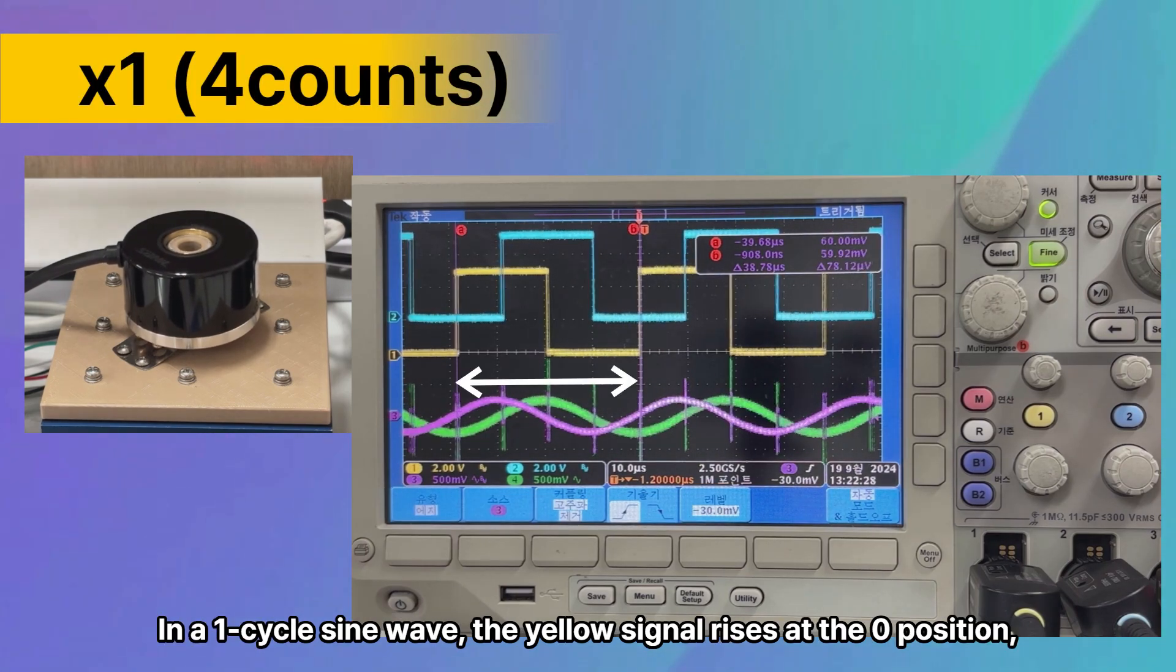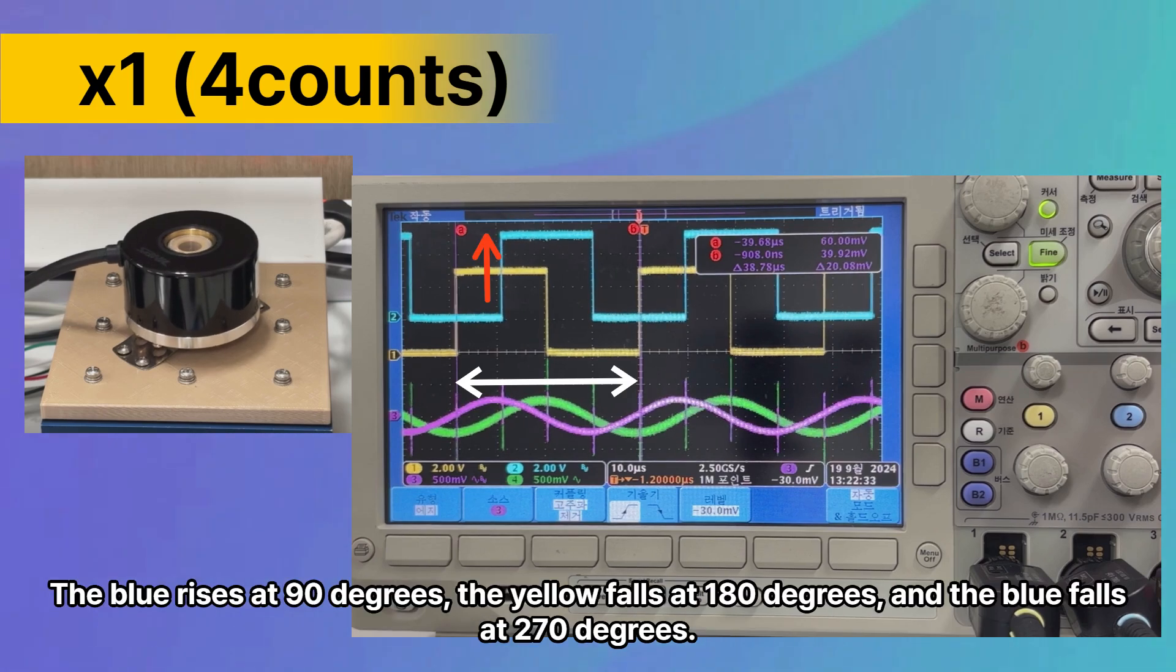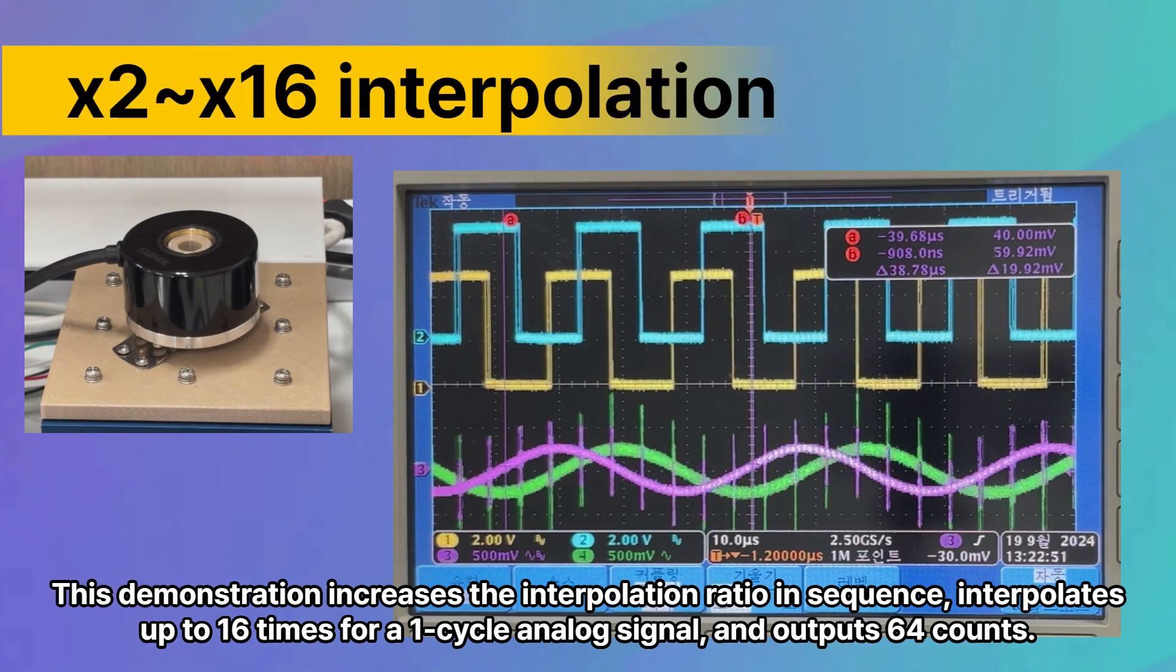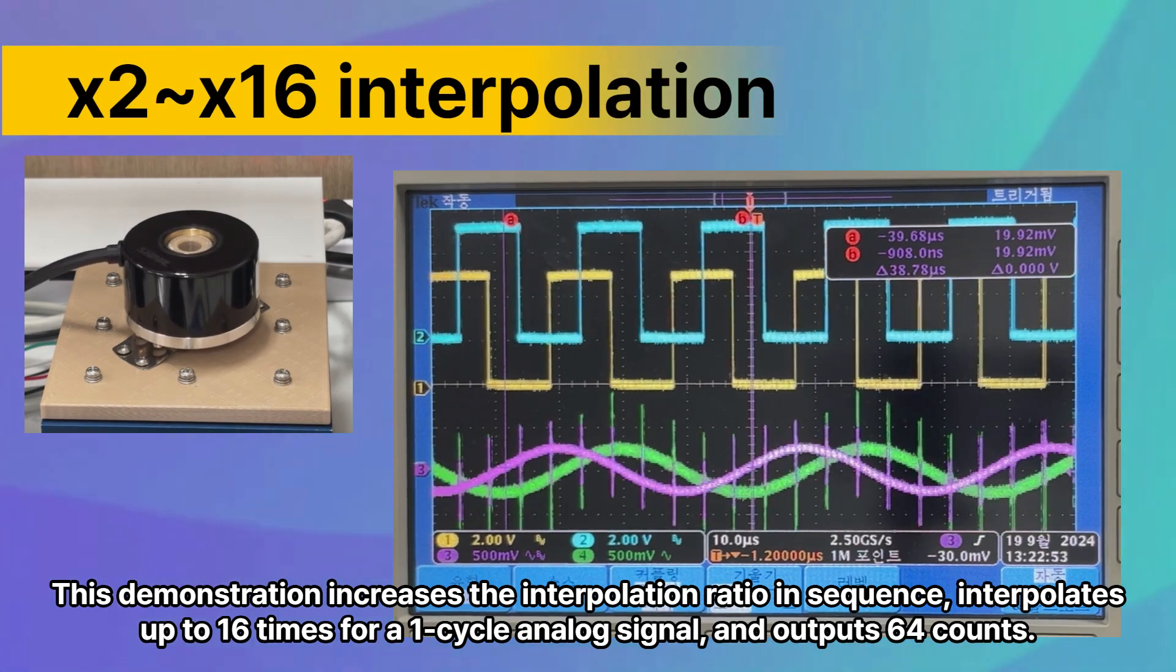In a one-cycle sine wave, the yellow signal rises at the zero position. The blue rises at 90 degrees, the yellow falls at 180 degrees, and the blue falls at 270 degrees.